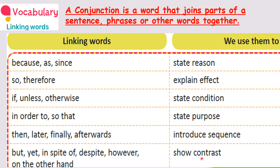Watch carefully, children. Let's check the first one: because, as, since. These three linking words are used when you are in a position to give some reason — to state reason. For example: 'I missed the class because I was sick.' 'As I was sick, I missed the class.' 'Since I was sick, I missed the class.'